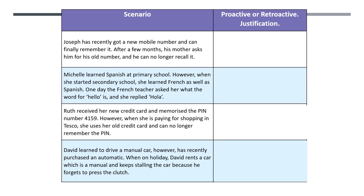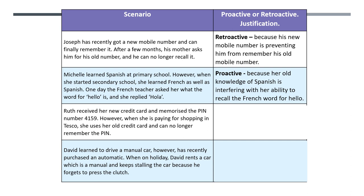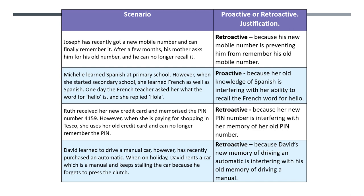Now pause the video, look at the scenarios, read through them, say whether it's proactive or retroactive, and justify your answer. Let's look at the answers: Joseph is retroactive because his new mobile number is preventing him from remembering his old one. Michelle is proactive because her old knowledge of Spanish is interfering with her new ability to recall French. Ruth is retroactive because her new pin number is interfering with her memory of an old one. David is also retroactive because his new memory of driving an automatic is interfering with his old memory of driving a manual. Make sure you've got those right — if not, correct them and look over the definitions again.